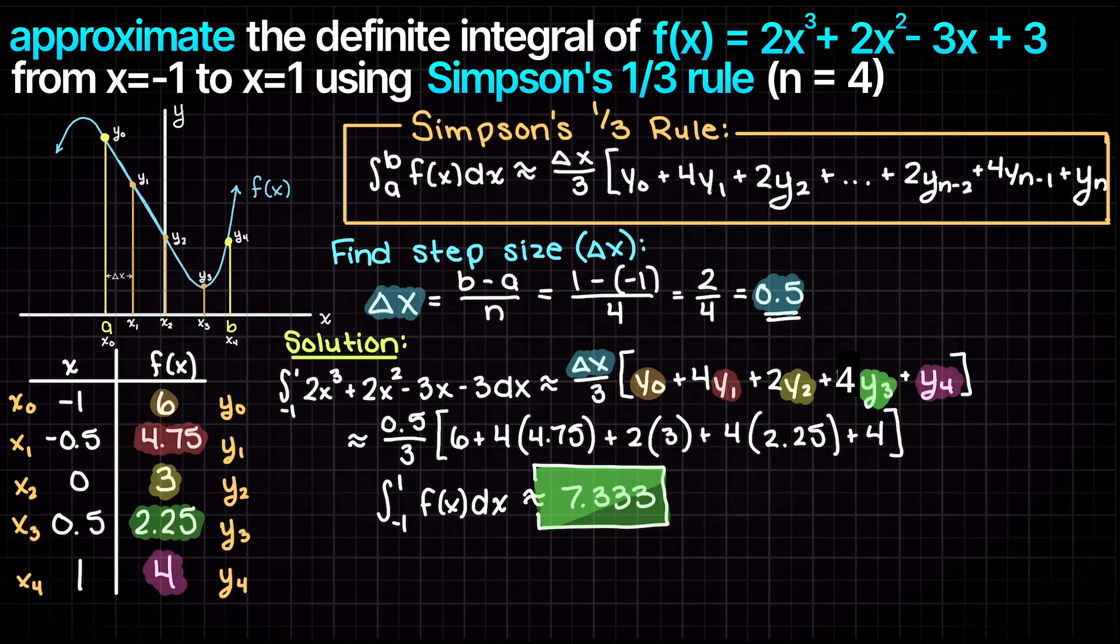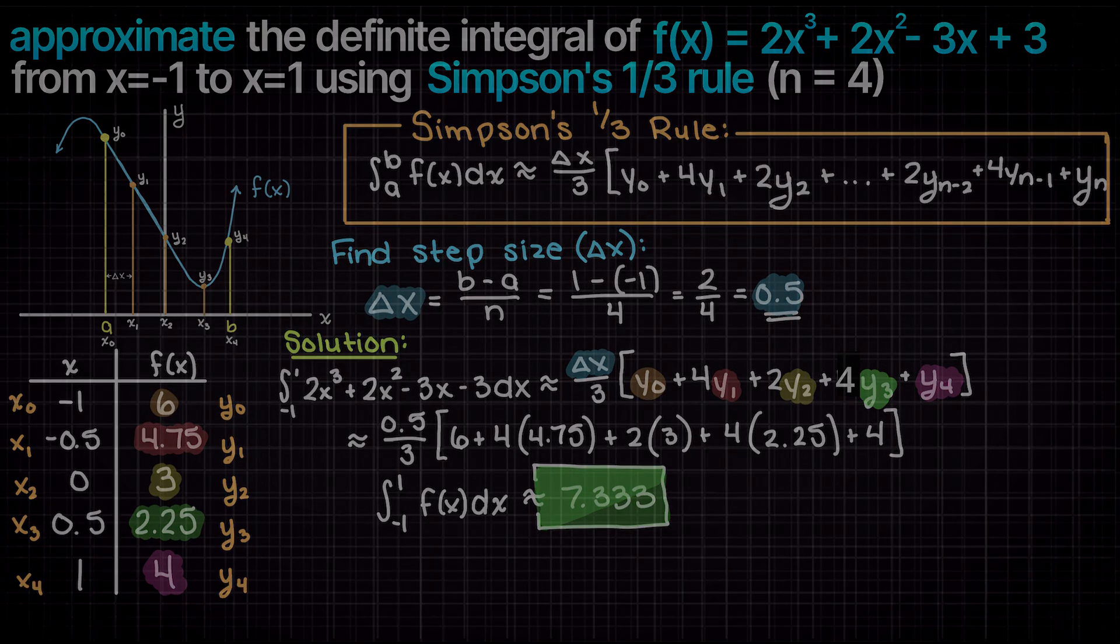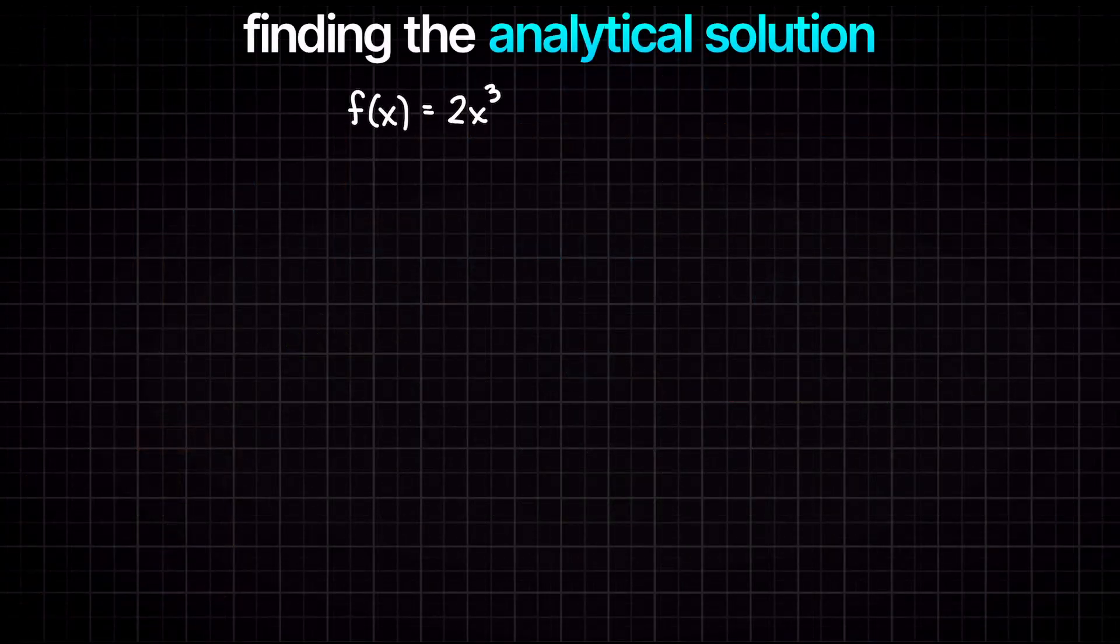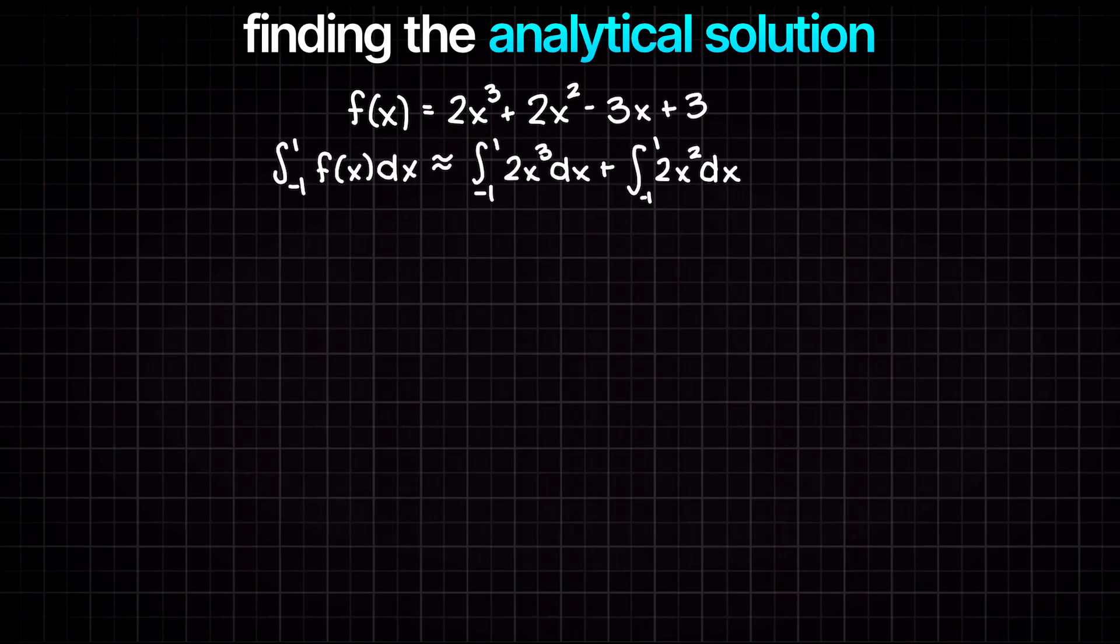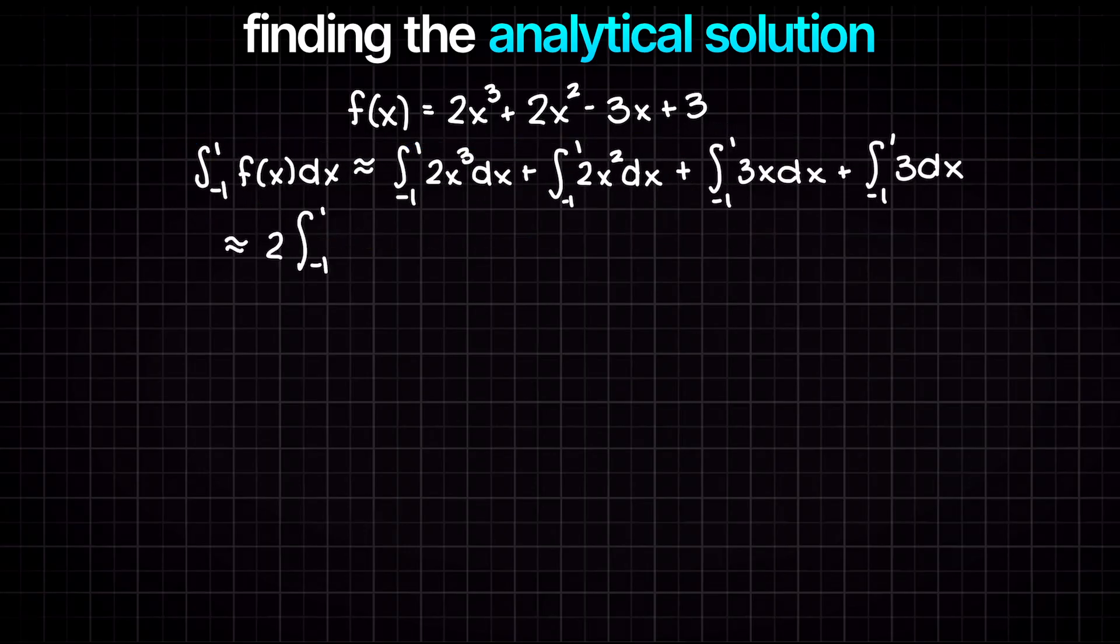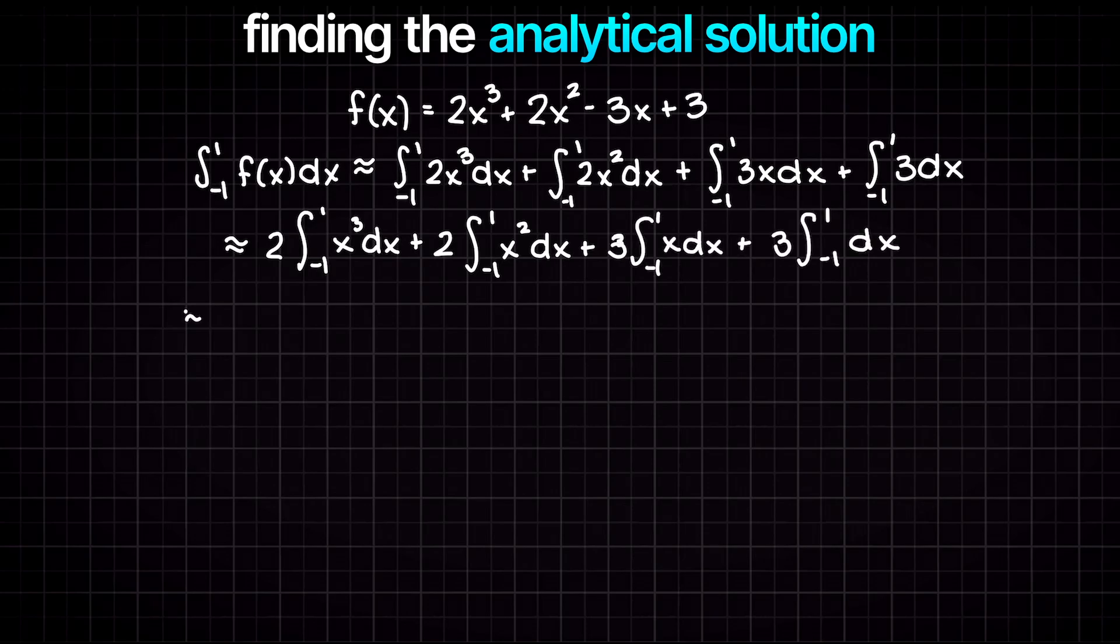Well, because we began with a simple polynomial, this is actually very easy to calculate. Using the sum rule for integrals, we can actually break our integral apart into its components, making finding a solution extremely easy. Then, using the exponent rule and the multiplication of constant rule, we can just go ahead and solve these couple simple definite integrals.